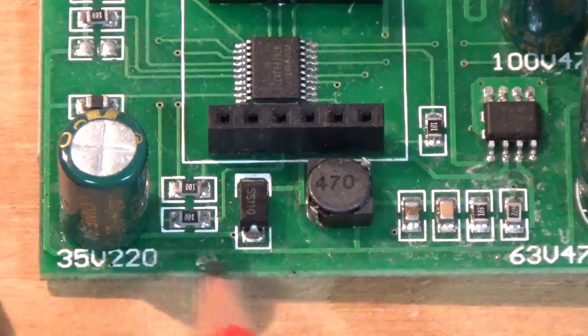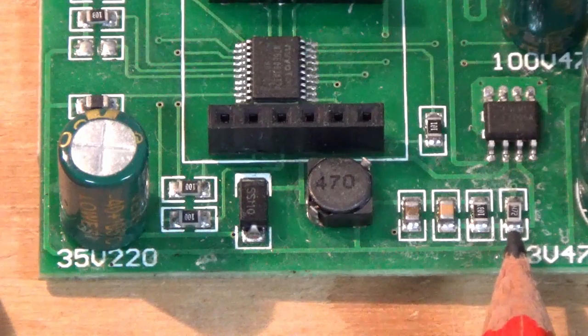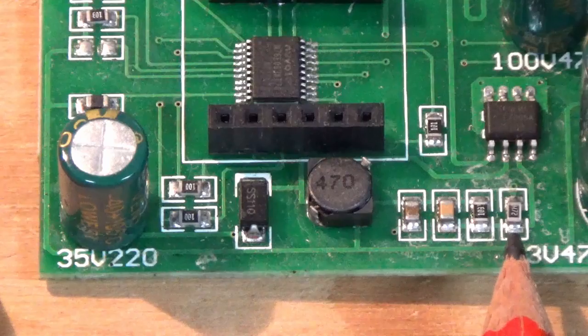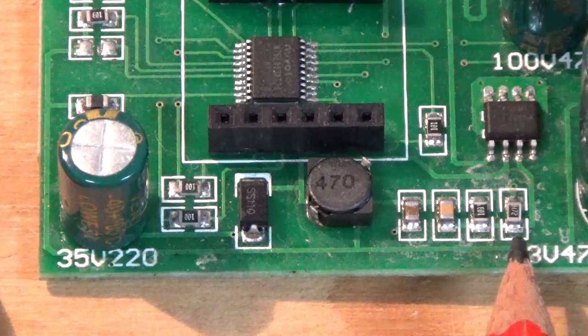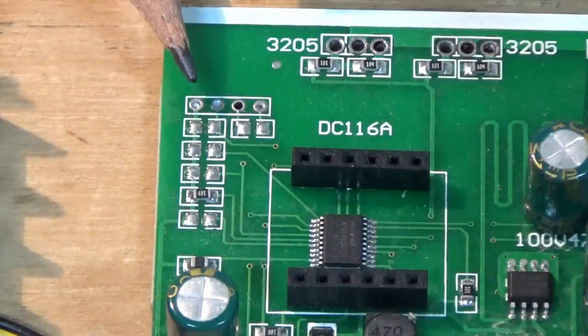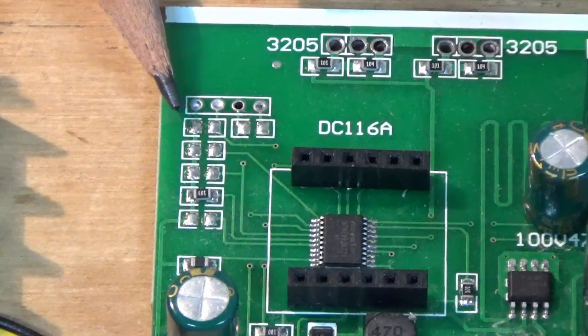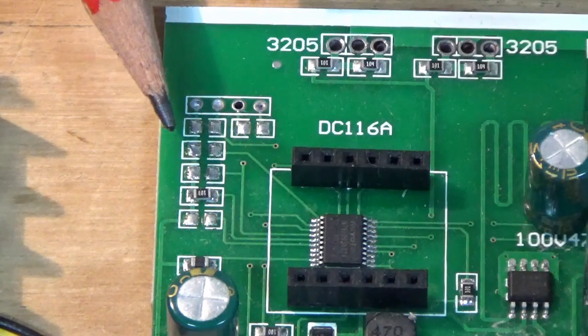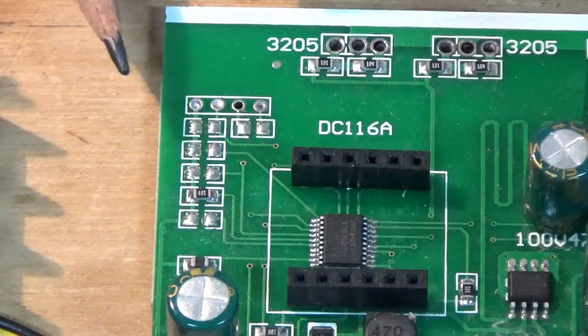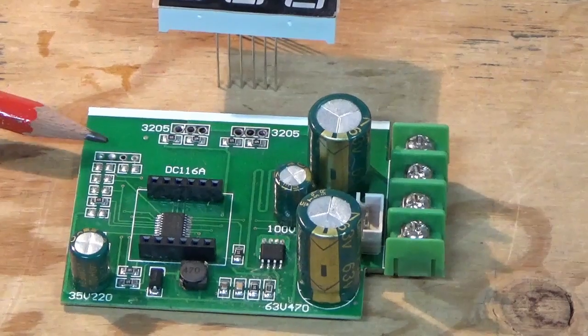So then we started looking at the bottom part of the board here, and we noticed that this particular resistor here, or surface mount resistor, was valued at 4.7k, and on the working board it should have been 3.3k. So what we found in this area is that there were one, two, three, four—four 10k resistors missing.